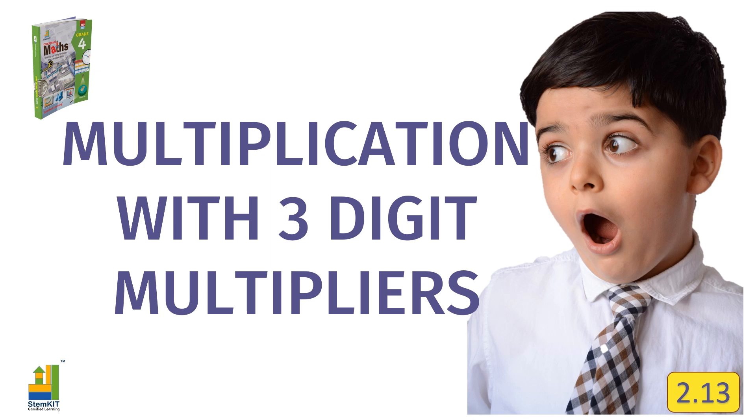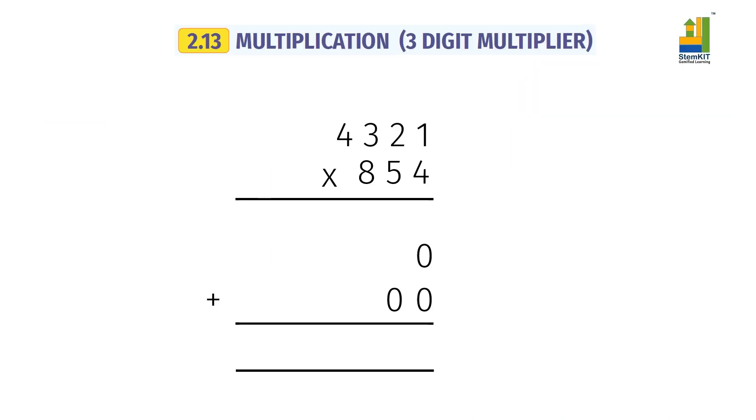Multiplication with 3-Digit Numbers is easy once you understand the steps. Here 4321 is the multiplicand and 854 is the multiplier. The answer to multiplication is called the product.